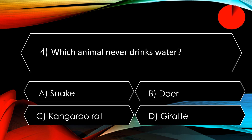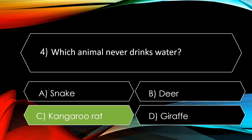The next question: which animal never drinks water? The options are A. Snake, B. Deer, C. Kangaroo rat. The correct option is C. Kangaroo rat. Found in the northwestern desert in the US, they never drink water in their whole lifespan. Scientists have found that they do not need water for their digestive systems.